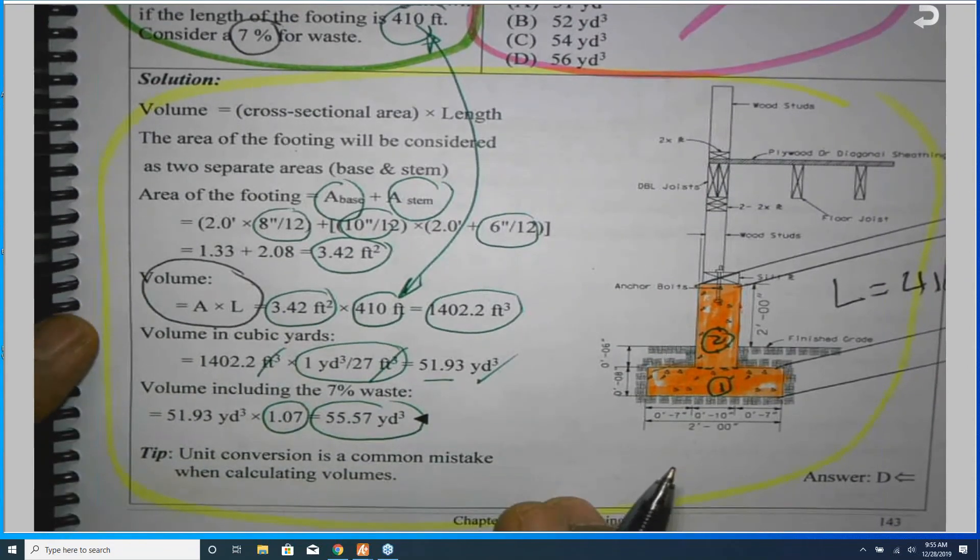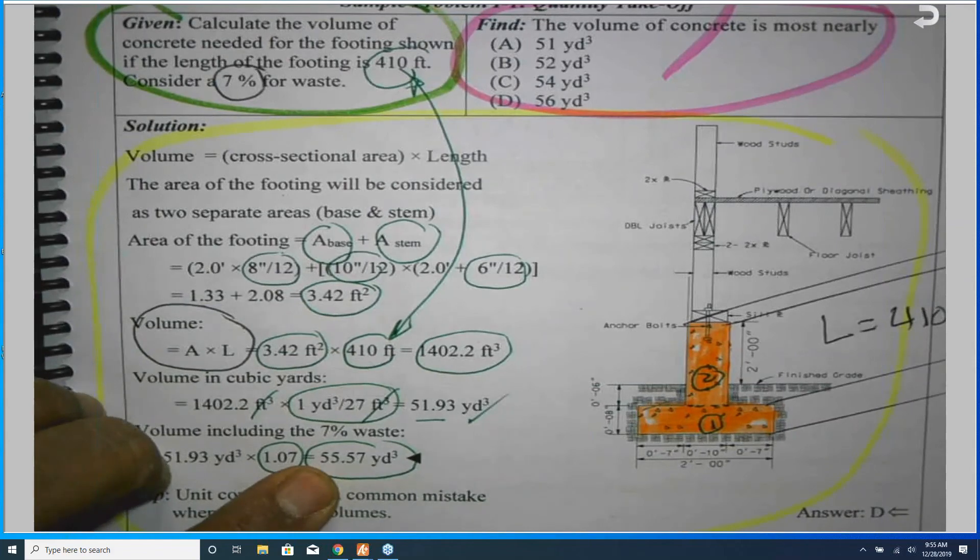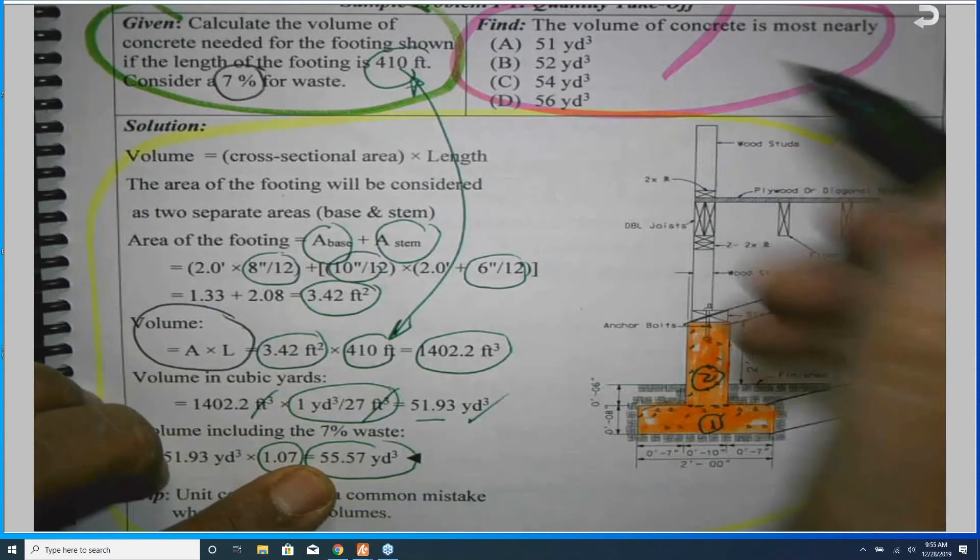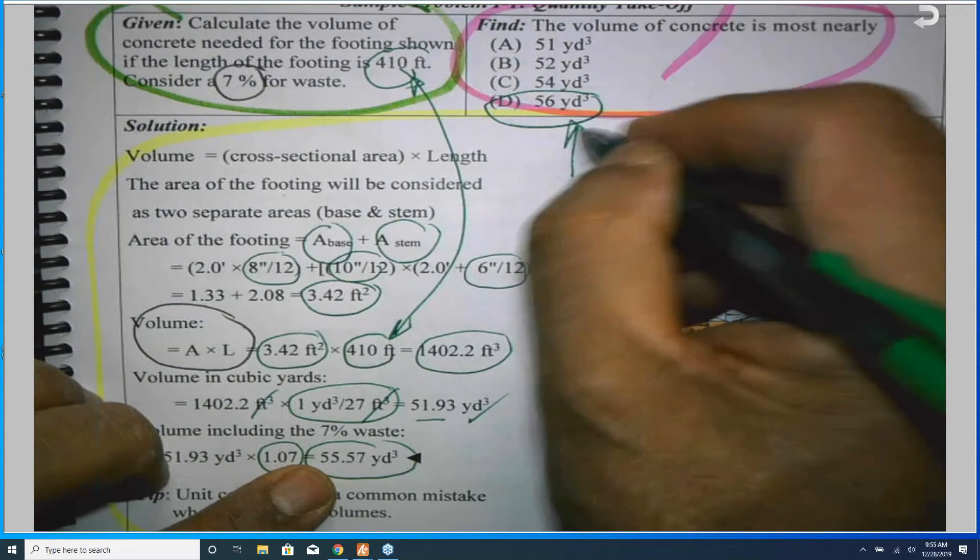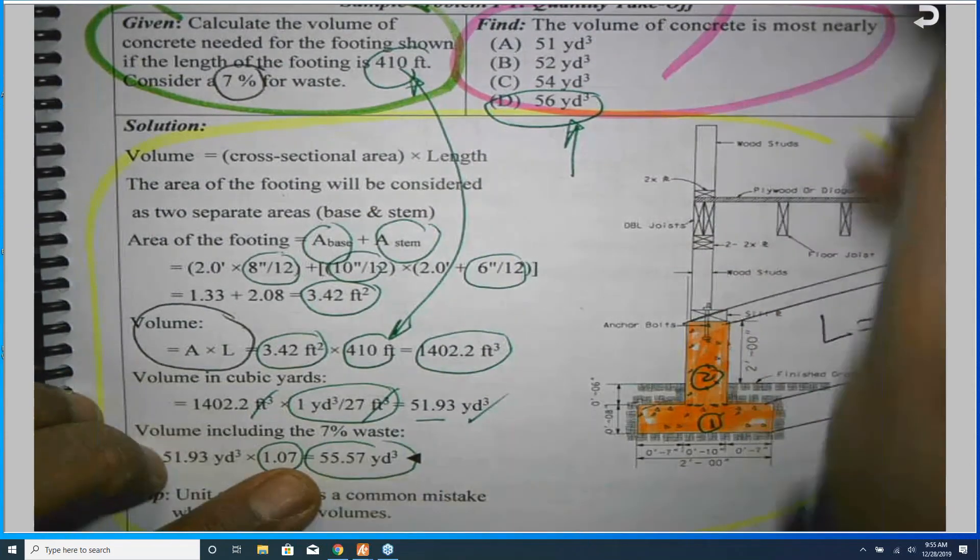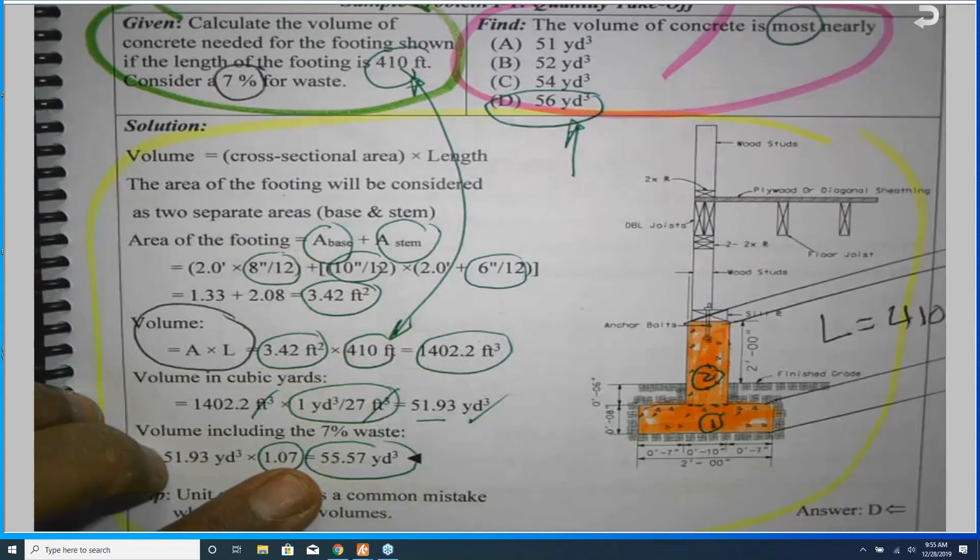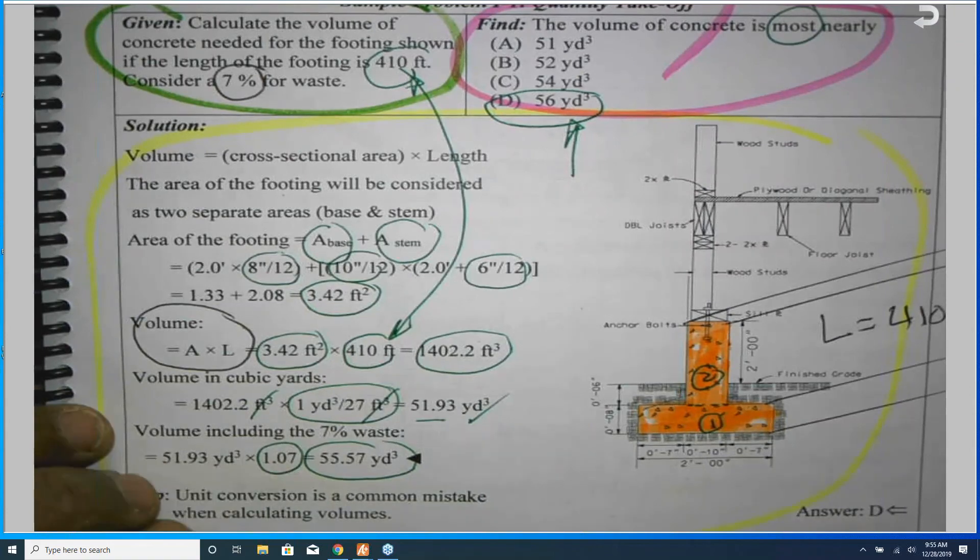As our friend said, we round up. I'm not going to order 55.57. I said okay, I'm going to order 56 cubic yards, and this is what the most nearly will be, and I select the answer D.